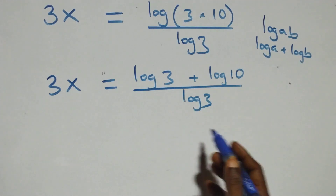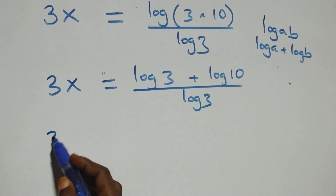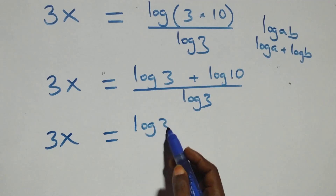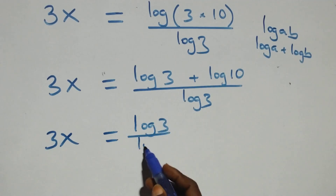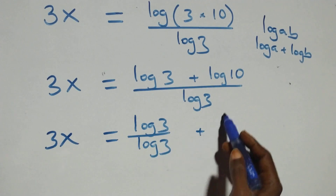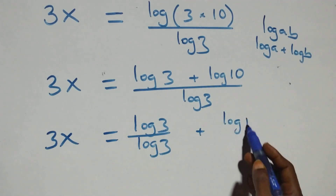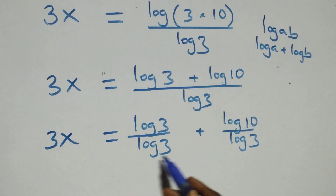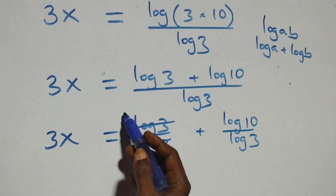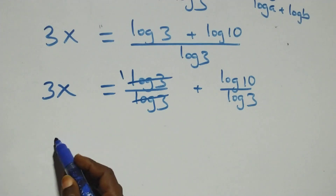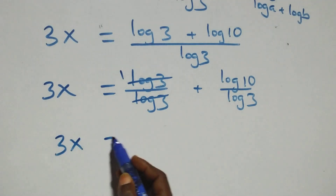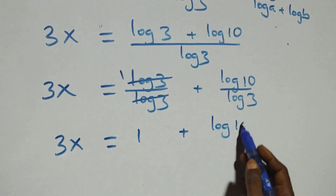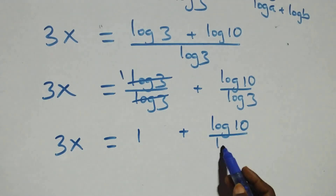Then here we separate this into two fractions and we have 3x equals log 3 over log 3 plus log 10 over log 3. That is, here log 3 cancels each other and we have 1 left, so this becomes 3x equals 1 plus log 10 over log 3.